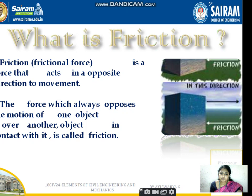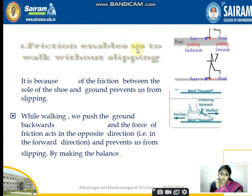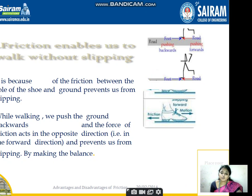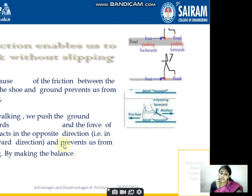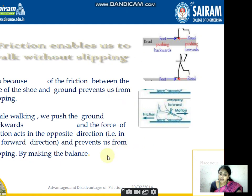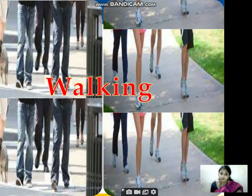Friction enables us to walk without slipping. If you want to walk forward, you can see how the leg pushes backward in order to move forward, because there is a frictional force between the sole of the shoe and the ground which prevents us from slipping. This force is moving in one side whereas friction is in the opposite side. We push the ground backward and go forward, whereas the friction acts in the opposite direction and prevents us from slipping.